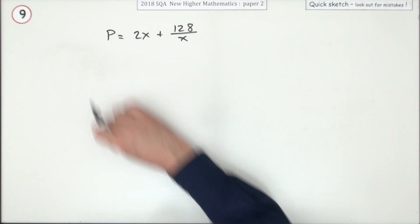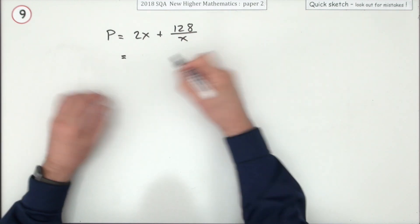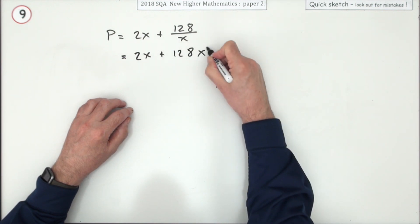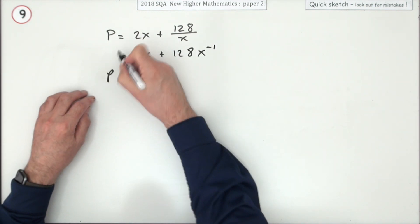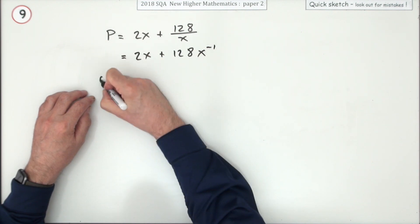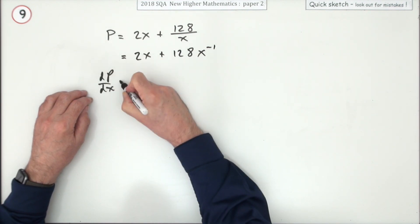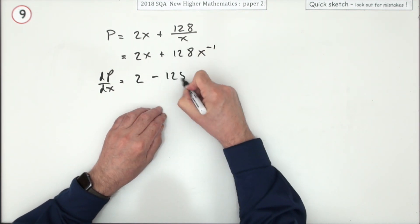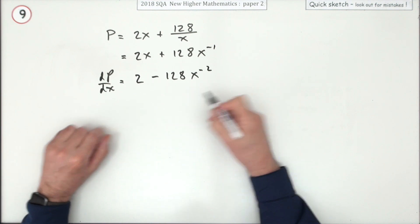So what's the minimum value of P? Well you're going to differentiate it. Let's just rewrite this though as 2x plus 128 x to the negative one, so that if we called that P(x), I'd put P dash, I'm just going to call this dP/dx equals 2 minus, multiply by the power, minus 128, take one off the power, negative two.